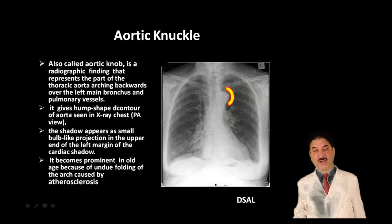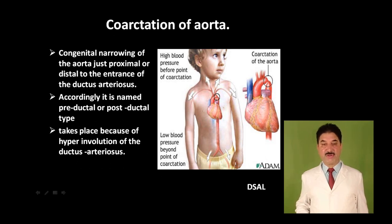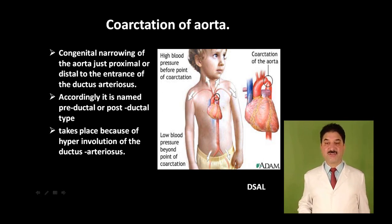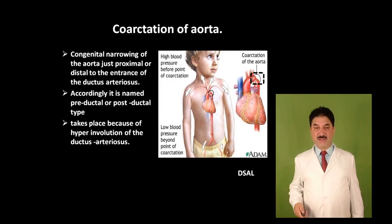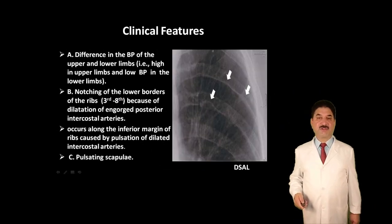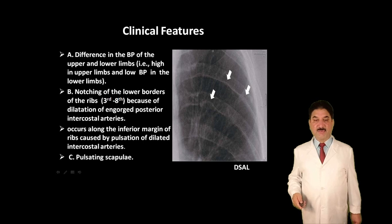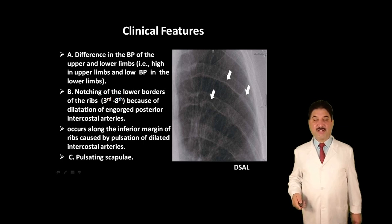Coarctation of the aorta is a congenital narrowing of the aorta just proximal or distal to the entrance of the ductus arteriosus, named pre-ductal or post-ductal type accordingly. It occurs due to hyper-involution of the ductus arteriosus. Clinical features include high blood pressure in the upper limbs and low blood pressure in the lower limbs. On chest X-ray there is notching of the lower borders of the ribs due to dilatation of the engorged posterior intercostal arteries, caused by pulsation of dilated intercostal arteries. It may also present as a pulsating scapula.